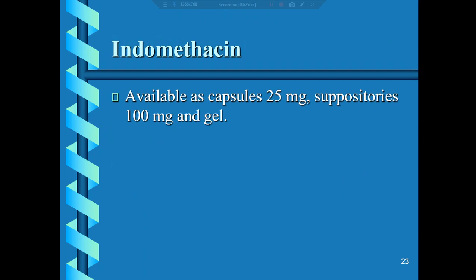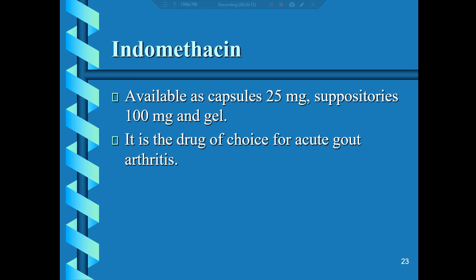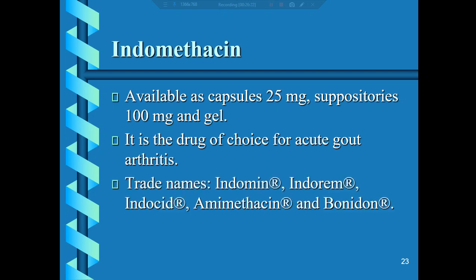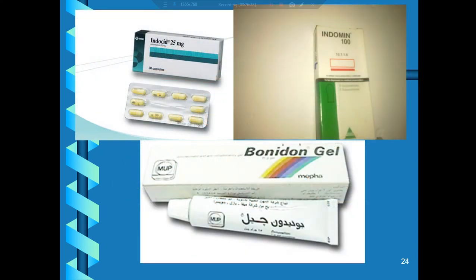Indomethacin is a non-steroidal anti-inflammatory drug available as capsules 25mg, suppositories 100mg, and gel. It is the drug of choice for treatment of acute gout arthritis. Trade names include Indocin and others; it is also available as suppositories and indomethacin gel.